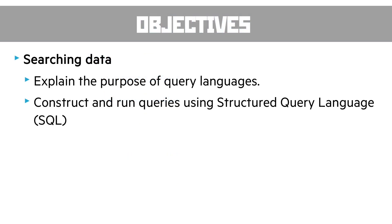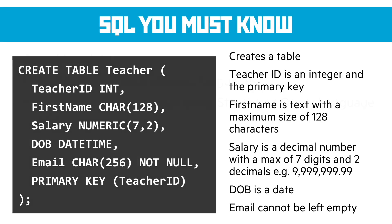SQL — commonly called SQL — is structured query language, a method of searching and creating databases in a programmatical way. Here's our first example: it creates a table called teacher with the primary key called teacher_id which is an integer. Then we've got first_name, which is a set of characters with a maximum of 128. Then salary, which is a numeric data type — the first number tells us how many digits we can have (seven) and the second how many decimals (two), giving a maximum salary of £9,999,999.99.